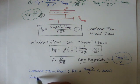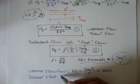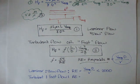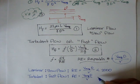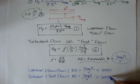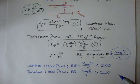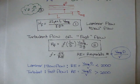For turbulent or fast flow, the Reynolds number — V average times the diameter of the pipe over nu — needs to be greater than 2,000. If the Reynolds number equals 2,000, we call that the transition point, where the flow is changing from laminar to turbulent or vice versa.